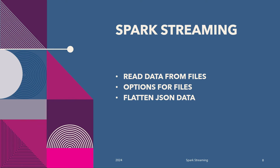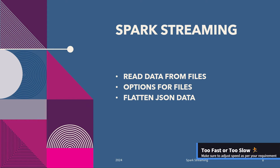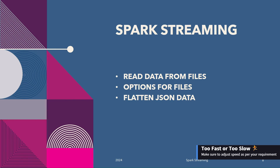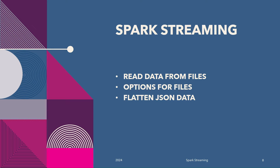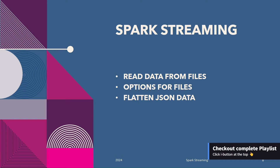Hello and welcome back. Now that we understand Lambda and Kappa architectures, today we are going to process files utilizing the Kappa architecture. We are going to read JSON files which will contain device data, flatten out that data and print it in the console, and again we will write those files in CSV format. We will also see different options that are available to process files in Spark Streaming.